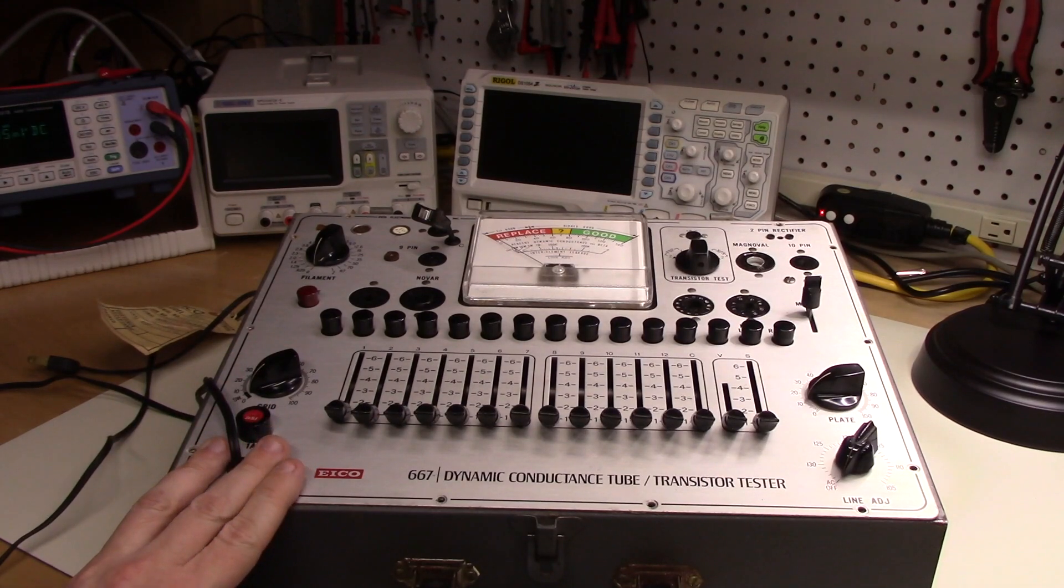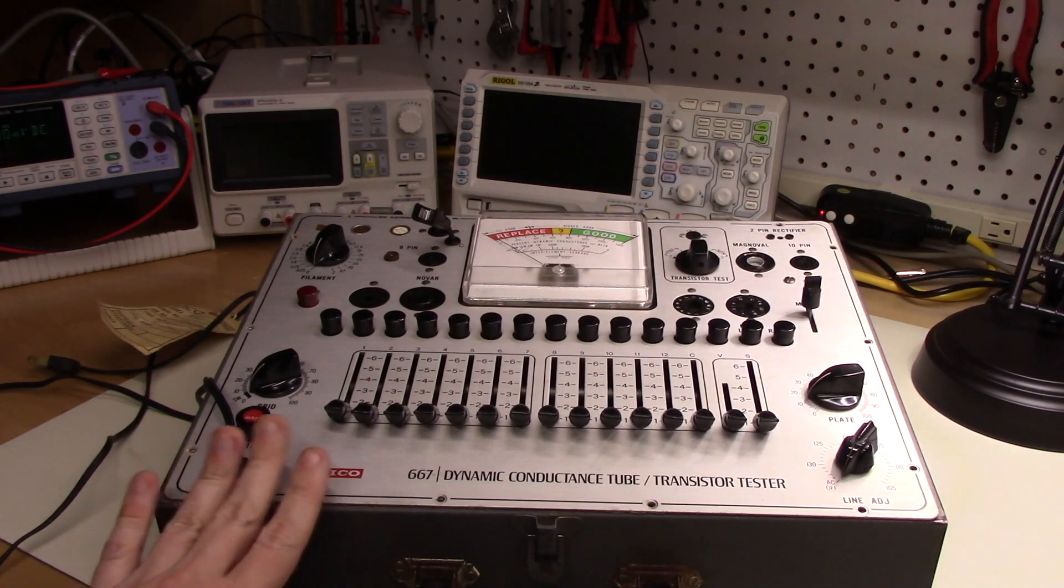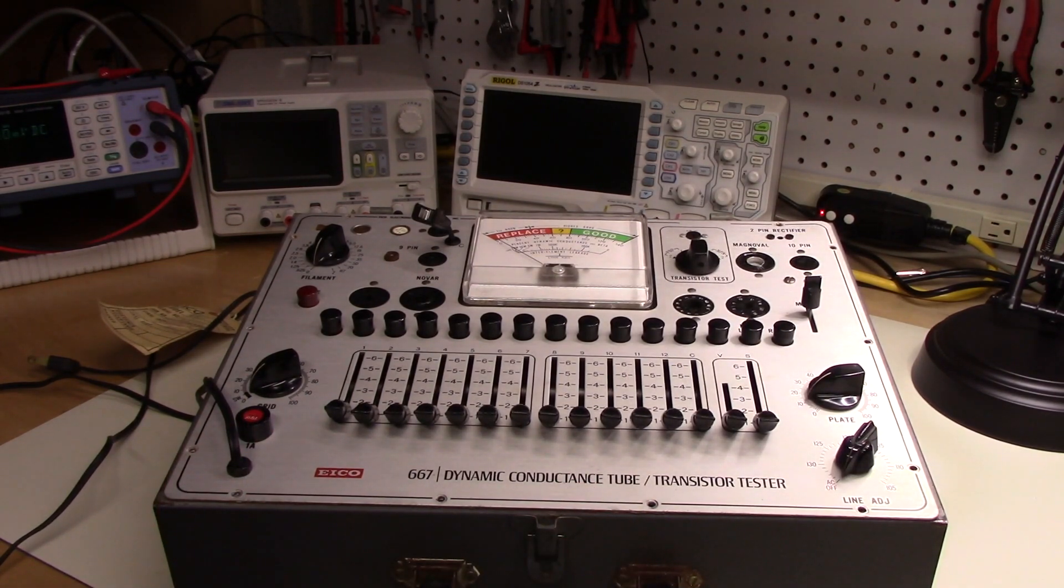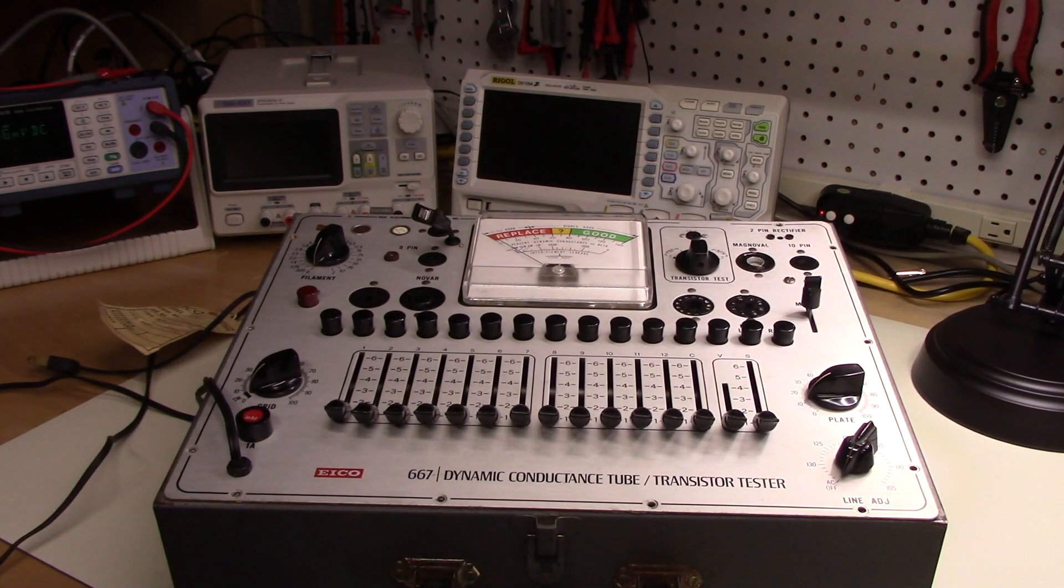Quick one. ICO 667 Dynamic Conductance Tube Tester. The Dynamic Conductance Tube Tester was a type of emissions tester, but it was an emissions tester with a twist and we'll talk about that a bit in the next video. If you want to skip ahead and you have a copy of Alan Douglas' book on antique tube testers, he treats the topic in depth in there and talks a bit about this particular tester as well. I encourage you to go look at that in the meantime. I hope you found this interesting. If so, please give a big thumbs up below. As always, thanks for watching.